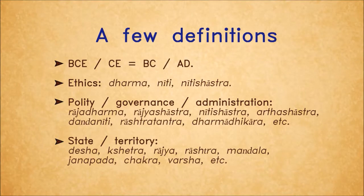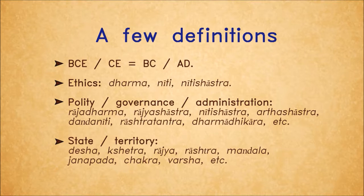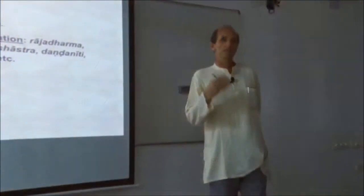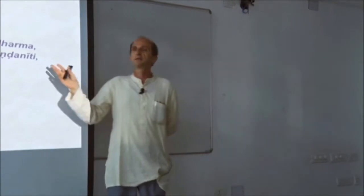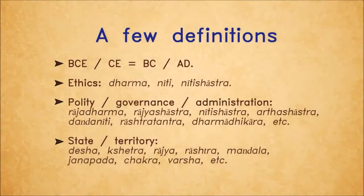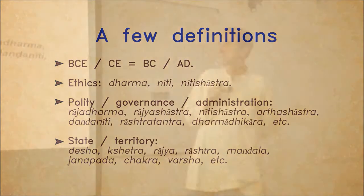Then Danda Niti. Danda is the stick, the scepter, the emblem of the ruler. In fact, the Ashokan pillar which you saw on the first slide is nothing but an enlarged Danda — the same symbol which continues. People often translate Danda as punishment — that is a narrow meaning, valid also — but the broad meaning of Danda is rule with authority.